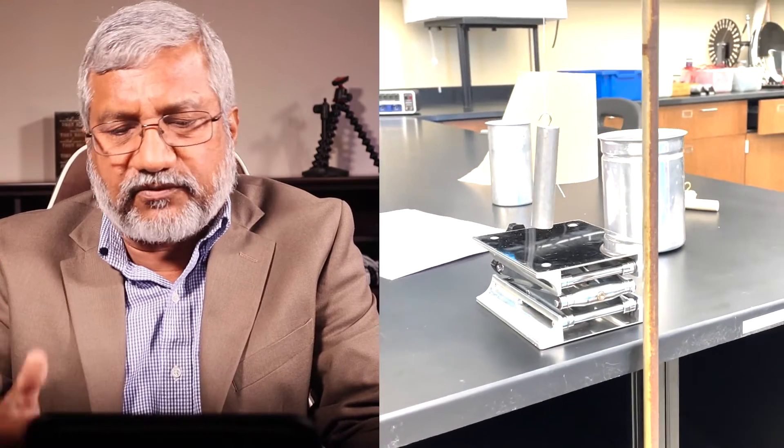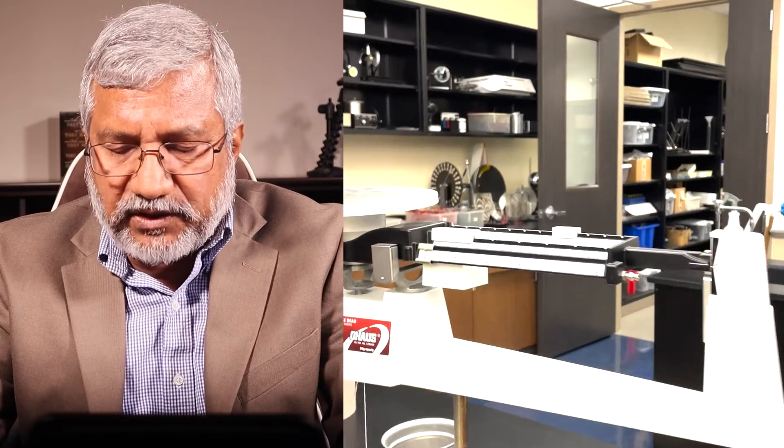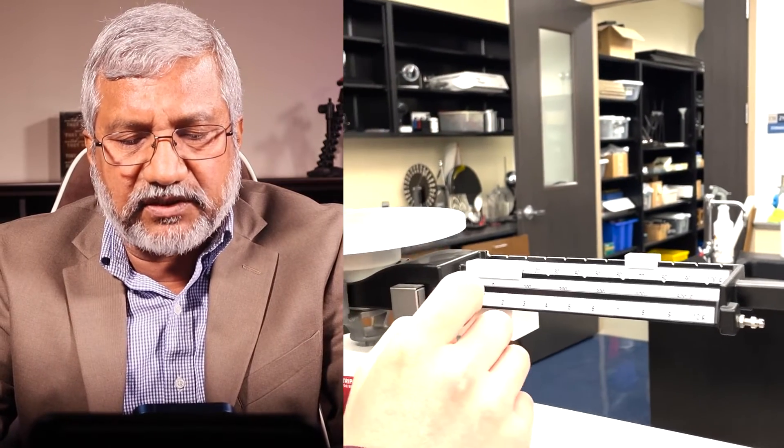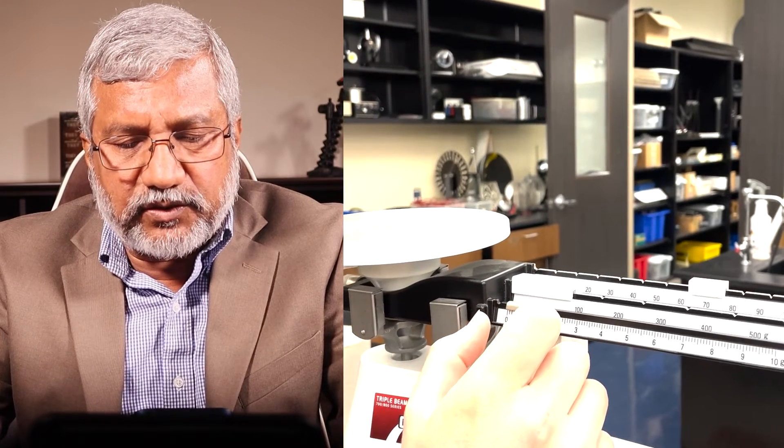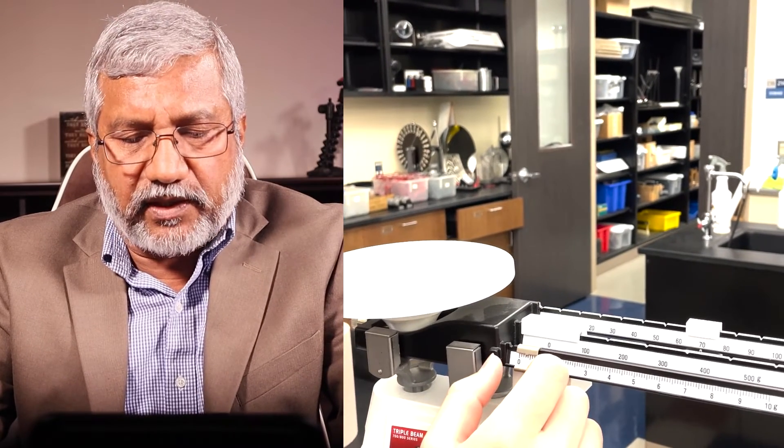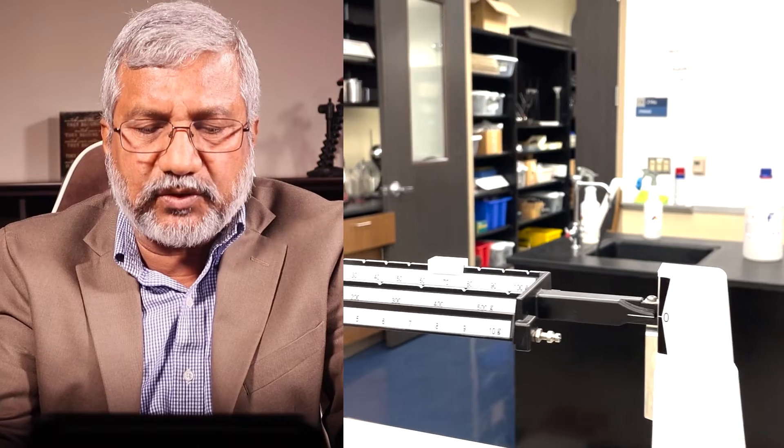Next, you take the aluminum cylinder. First of all, the scale is supported on a platform as shown, and the aluminum cylinder is suspended by means of a string and its mass is determined in air. The mass of the aluminum cylinder in air after the balancing is done comes out to be—you can see the 70 on the scale at the back, then you see zero on the scale in the middle, and 0.2 on the scale up in front. So that means the mass is 70.2 grams.